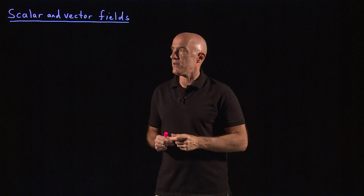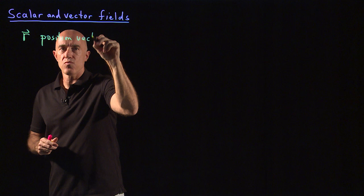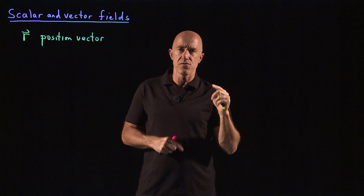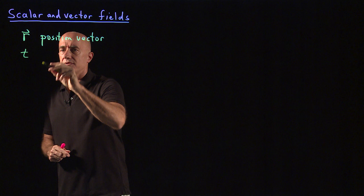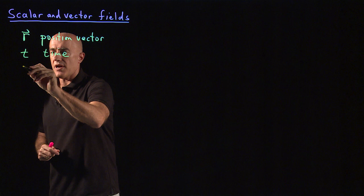We represent those phenomena using this concept of fields. So we need a position vector r, the standard position vector that will locate where you are in space, considering the measure of that thing you're measuring at that point in space. We need to know where we are in time. So t is the time. And then there are two types of fields: scalar fields and vector fields.